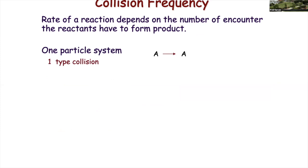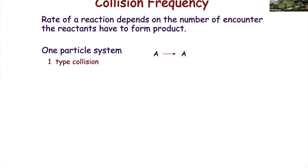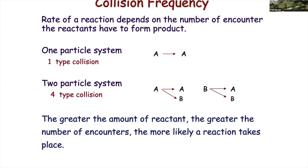The first factor is collision frequency. If you have one particle and it collides with itself, you have one type of collision. However, the more particles you have, you have more ways, more collision types. So increasing the concentration — increasing the number of species partaking in the chemical reaction — speeds up the reaction. That's collision frequency.